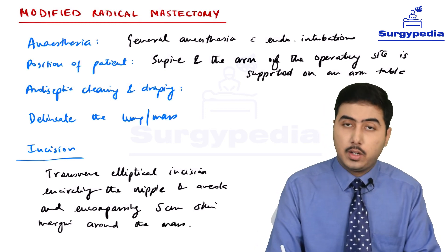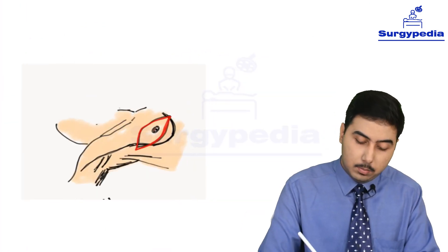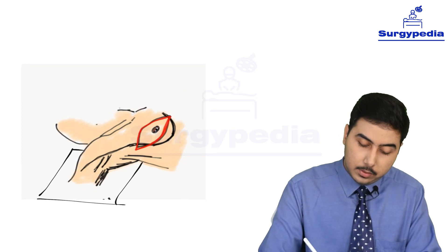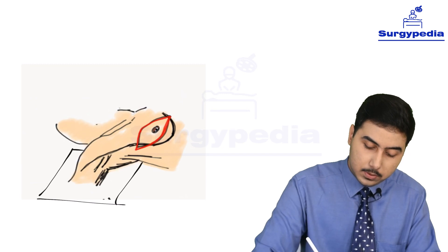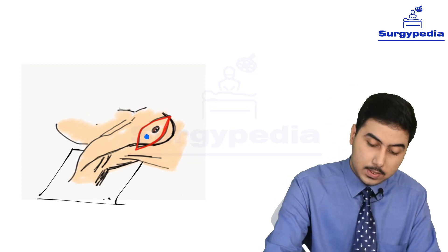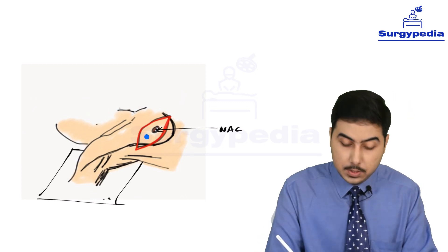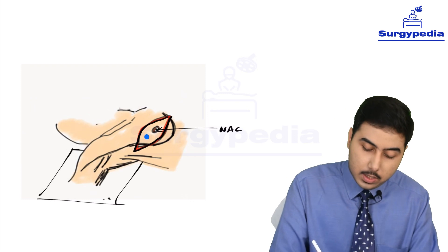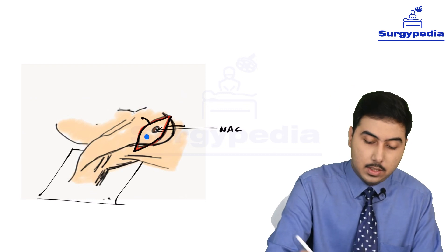Let us look at a diagram to understand better. The patient is supine; the right arm is supported on an arm table. We have made the incision — the red line is our incision. The blue marking is the nipple-areola complex (NAC), and we have the mass in the breast. After we make our incision, we get two parts — an upper and lower part — and we need to raise the skin flaps.